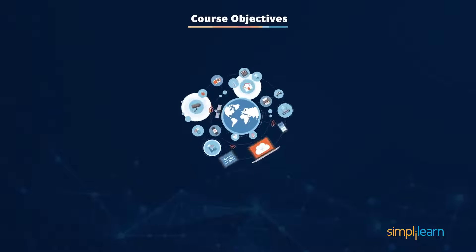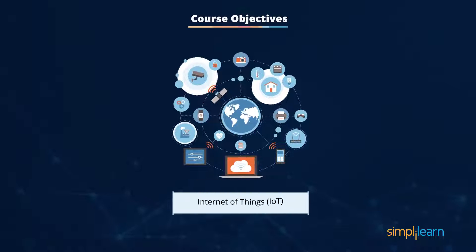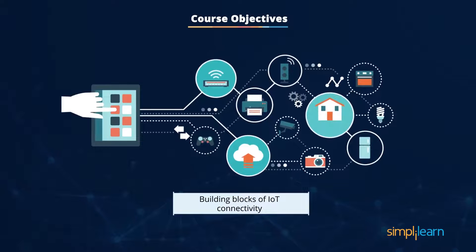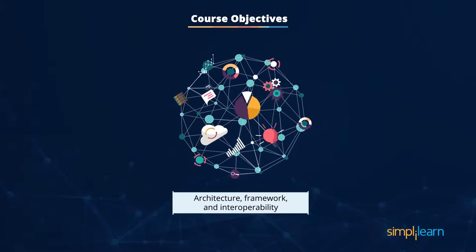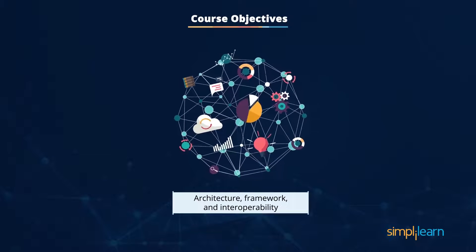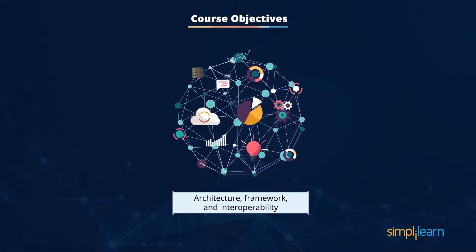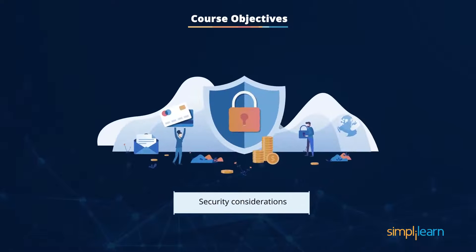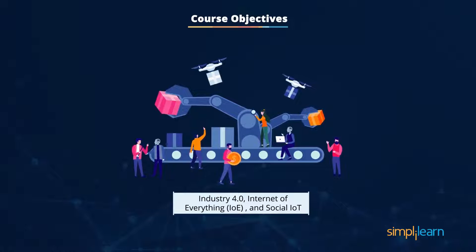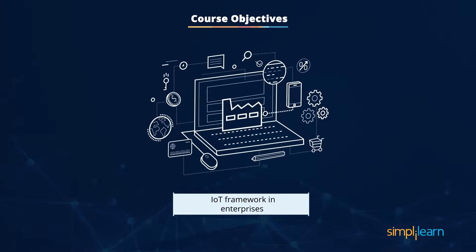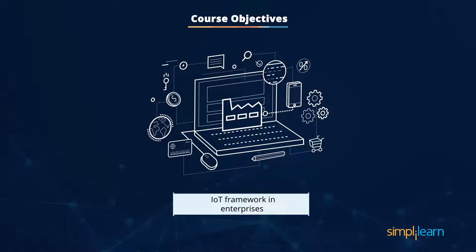After completing this course, you should be able to explain the concept of Internet of Things comprehensively, describe hardware, software, and other connectivity building blocks of IoT, describe design considerations pertaining to architecture, framework, and interoperability, explain the security considerations with IoT pertaining to vulnerabilities, explain Industry 4.0, Internet of Everything, and Social IoT, and finally describe IoT framework in enterprises.